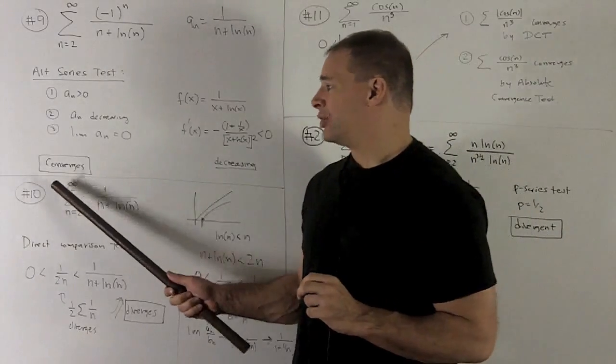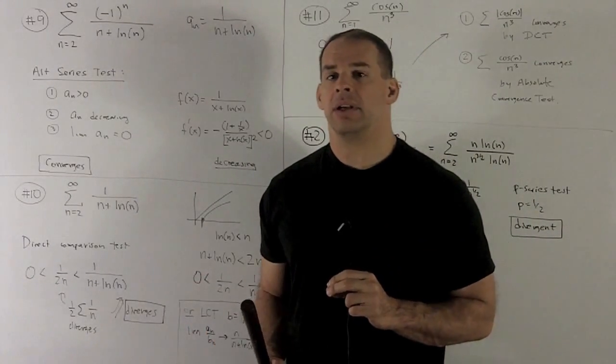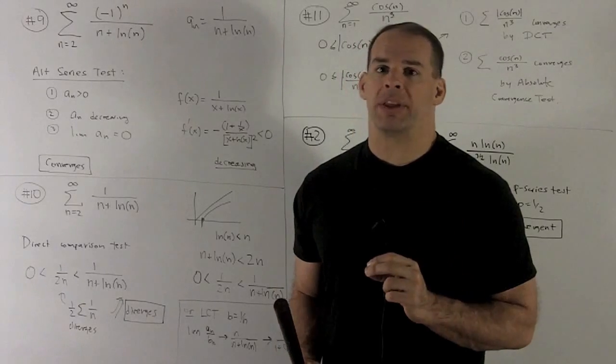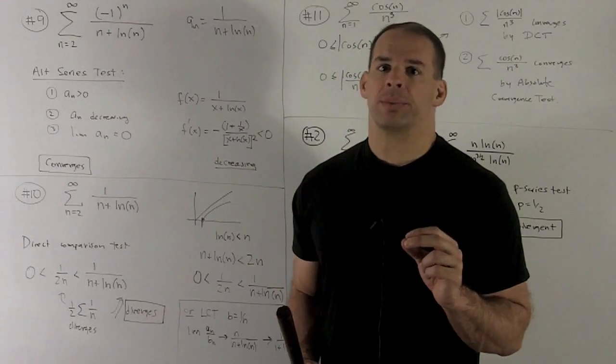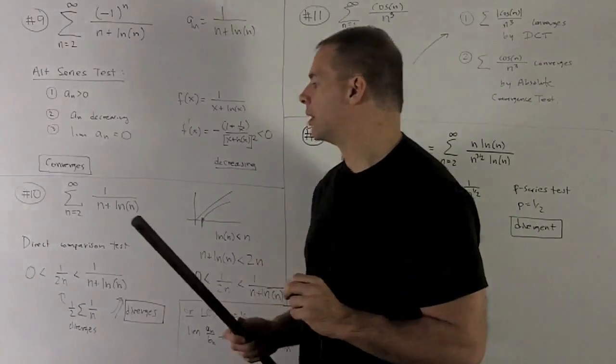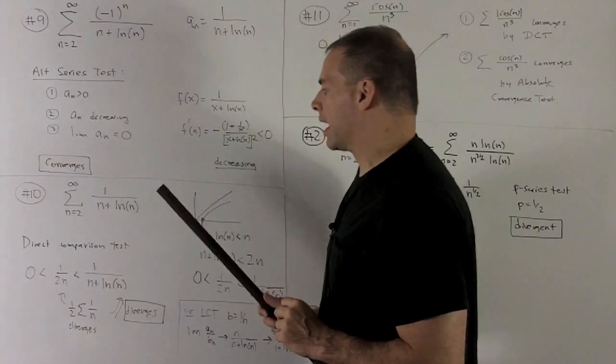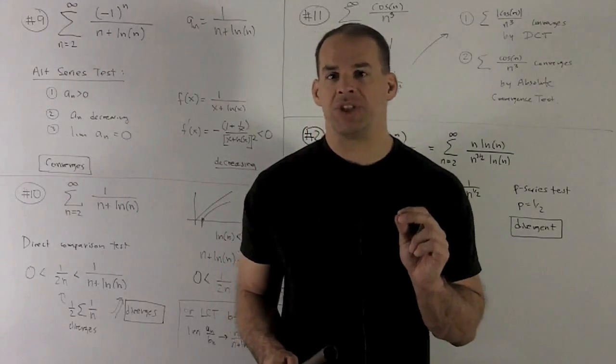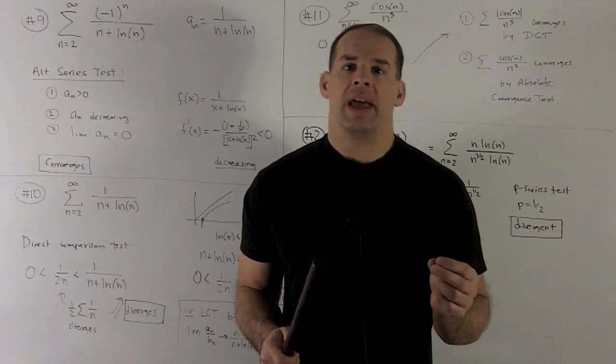Alright, number 10, try the same series, but let's get rid of the minus signs. This is a good place to do an application of direct comparison test with the inequalities. I'll also show you a simpler way to do it once we get past that. So I'm looking at the sum of 1 over n plus natural log of n. Now, I just mentioned, if I do it by direct comparison test, how's that going to work?